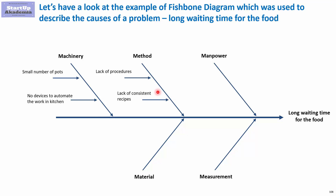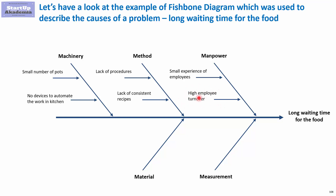When it comes to manpower, we may have too few experienced people and we may be experiencing high employee turnover. In other words, after we train the people they leave the company and we have to train new ones, so we don't benefit from the learning curve. When it comes to materials, we can have a low quality of products used.